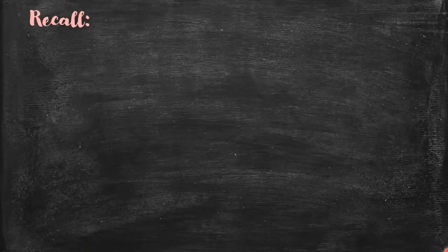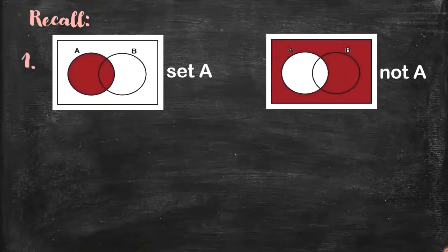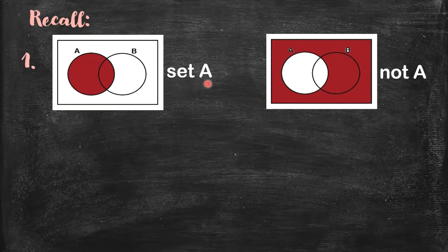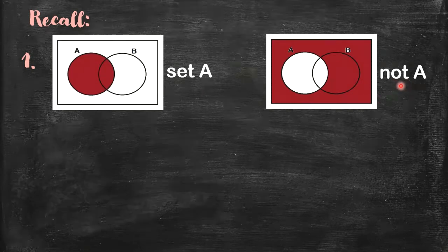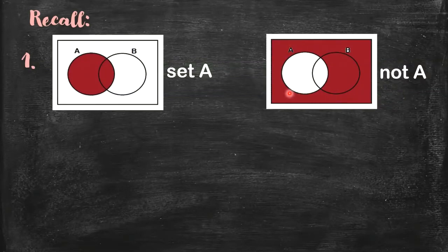So to answer the given probability problem, we're going to use Venn diagrams. It's nice to recall these two Venn diagrams. So here, when I say set A, you're going to count all the elements in the given set A — you focus on this shaded portion. And then when I say not A, you consider all the elements outside A. Everything is shaded except set A. So that's what not A means.